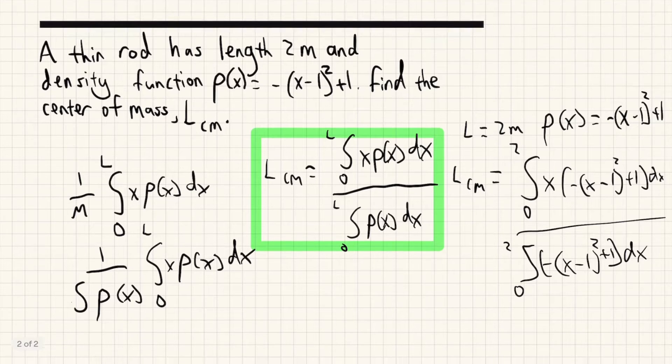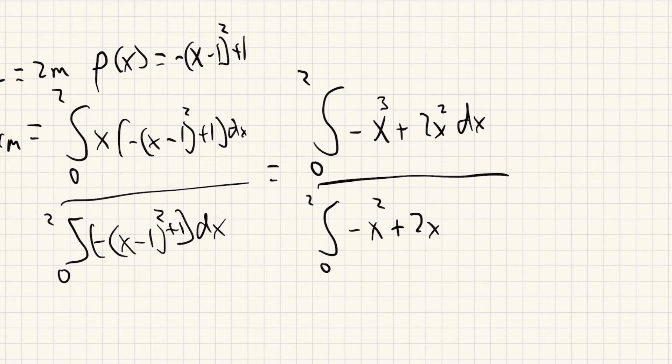So let's just solve that. Okay, so after multiplying this out, we can just integrate it. So the integral of -x³ is -x⁴/4 plus integral of 2x², which is 2/3 x³.